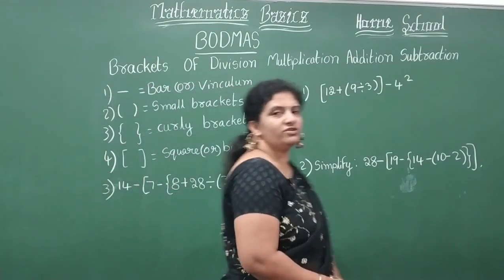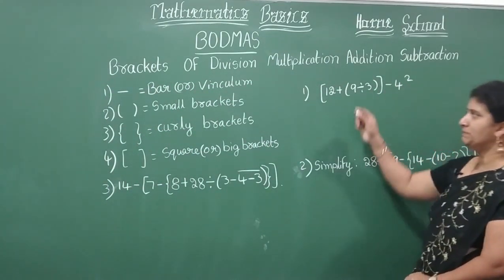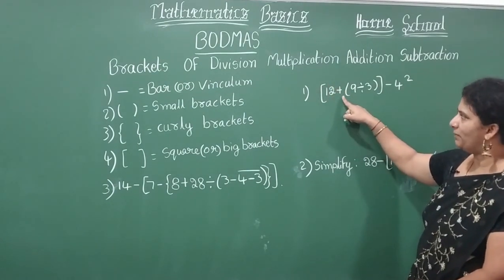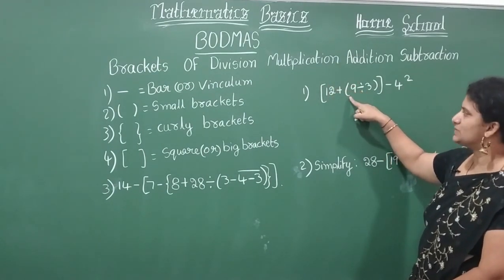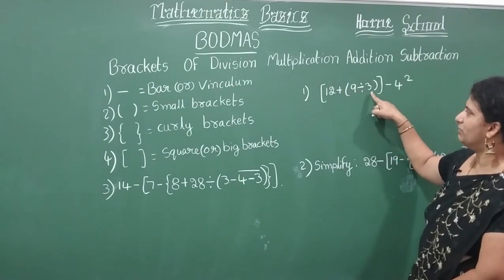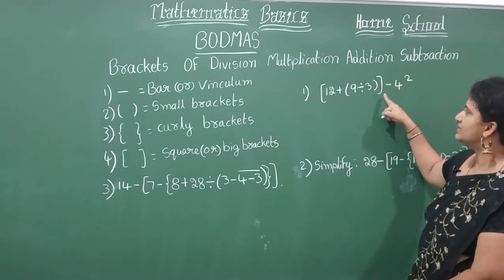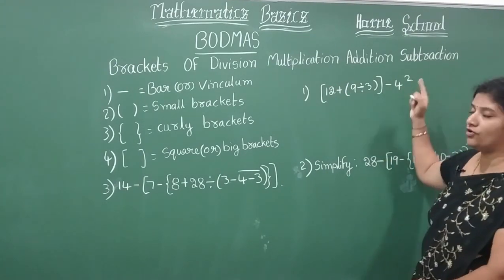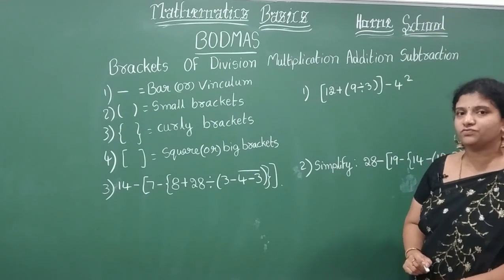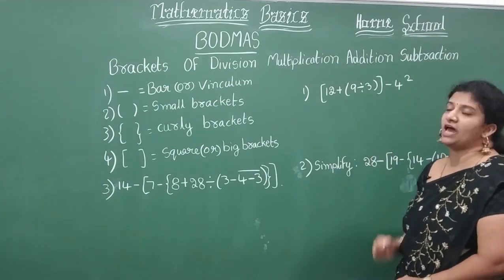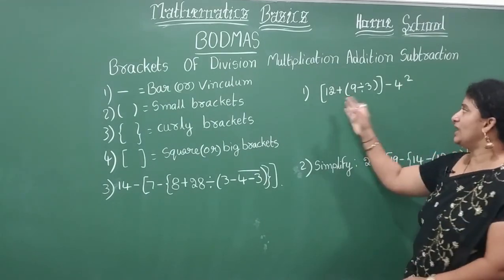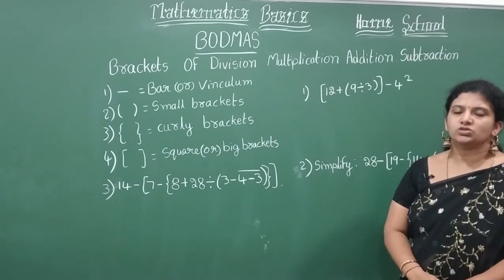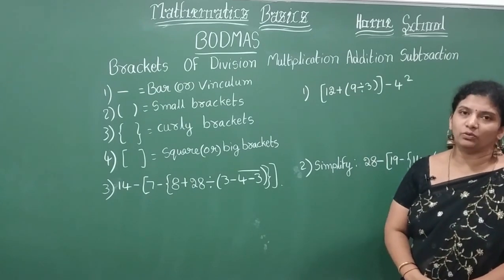So now let's see here, let's try to solve three examples. Square bracket 12 plus small bracket 9 divided by 3 bracket and square bracket minus 4 square. How to read this? 4 square means 4 into 4. Which I have to do first?